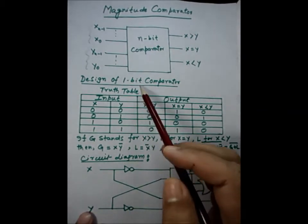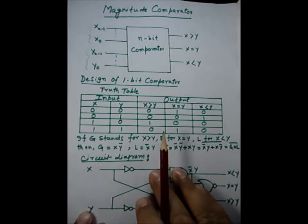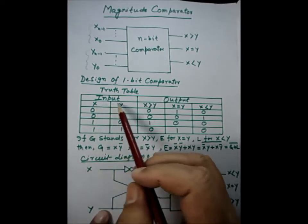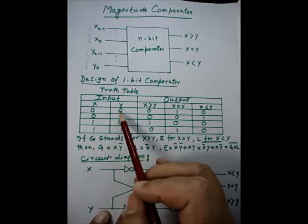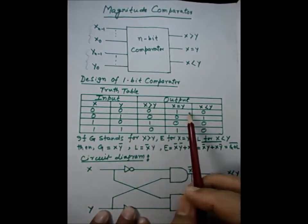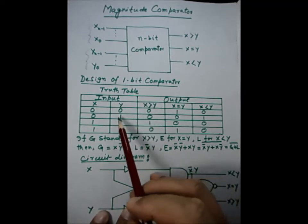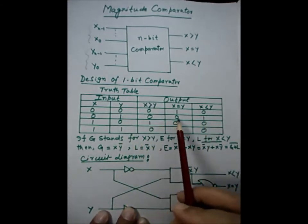Below, we have implemented a circuit for a one-bit comparator. First, we need to do the truth table. Since it is one-bit, X and Y are the two bits being compared. If both are zero, they are equal and the remaining two outputs are zero. If X is zero and Y is one, then Y is high, meaning X is less than Y, so that output becomes high and the remaining two are low.